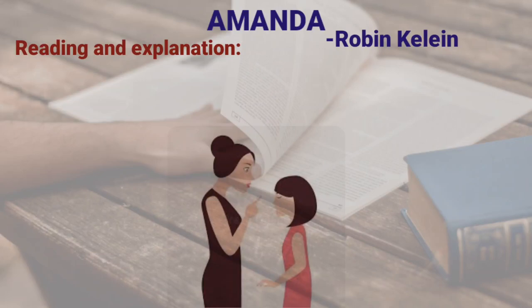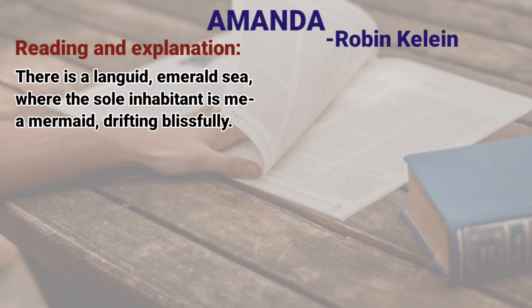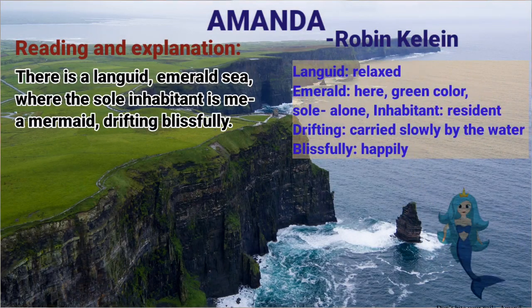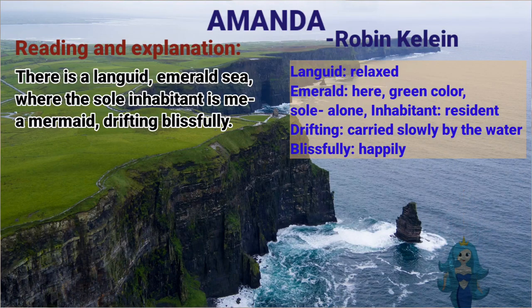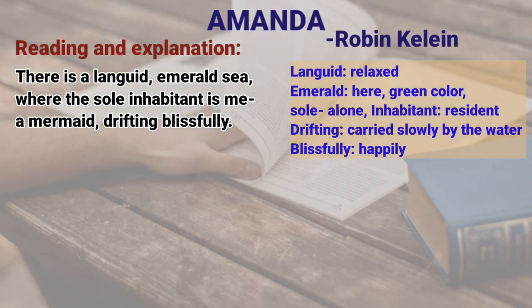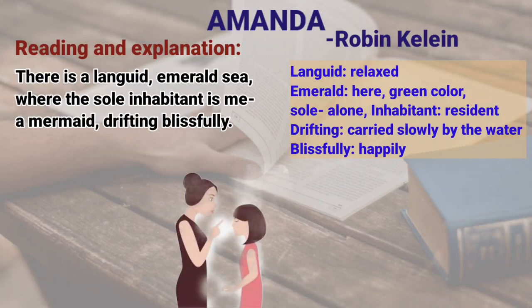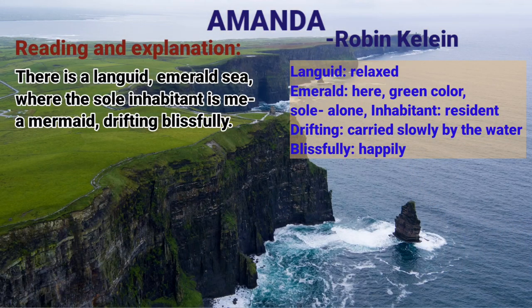The tone of instruction here is not a friendly one and does not make any sense to Amanda. The second stanza reads: 'There is a languid emerald sea, where the sole inhabitant is me, a mermaid drifting blissfully.' Languid means relaxed, emerald means green color, sole means alone, inhabitant means resident, and blissfully means happily. At this point, when she has been scolded by her mother, she imagines herself to be in a deep, beautiful, green sea.